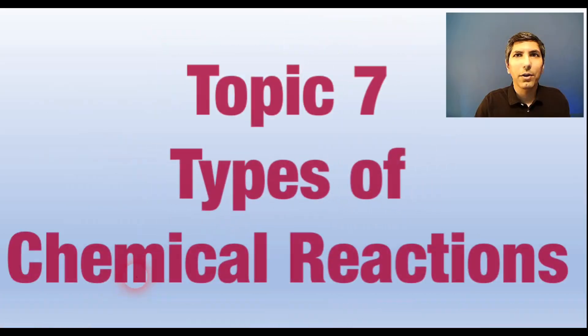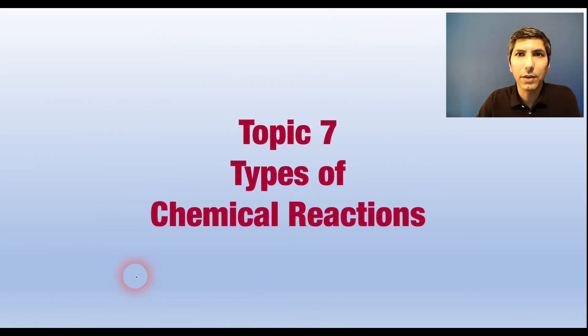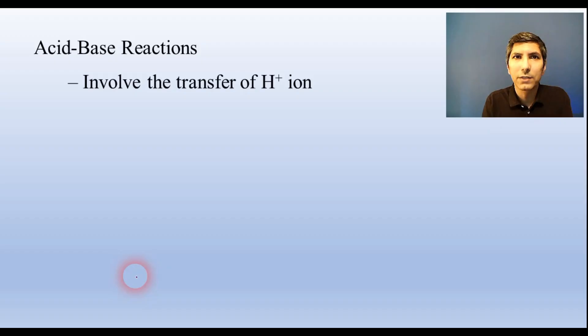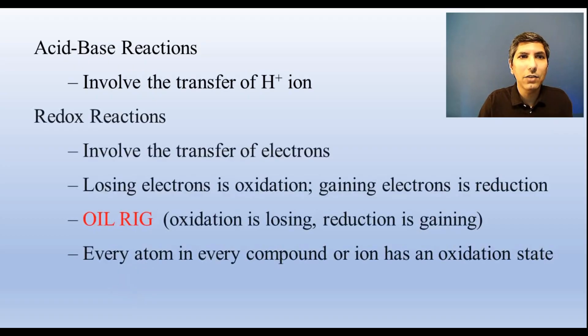In AP chemistry, there are three primary types of chemical reactions. Acid base reactions involve the transfer of a proton. Remember that a proton is essentially a hydrogen ion, or H+. Oxidation reduction reactions involve the transfer of electrons. The species that loses electrons is said to be oxidized, and the one that gains electrons is reduced.